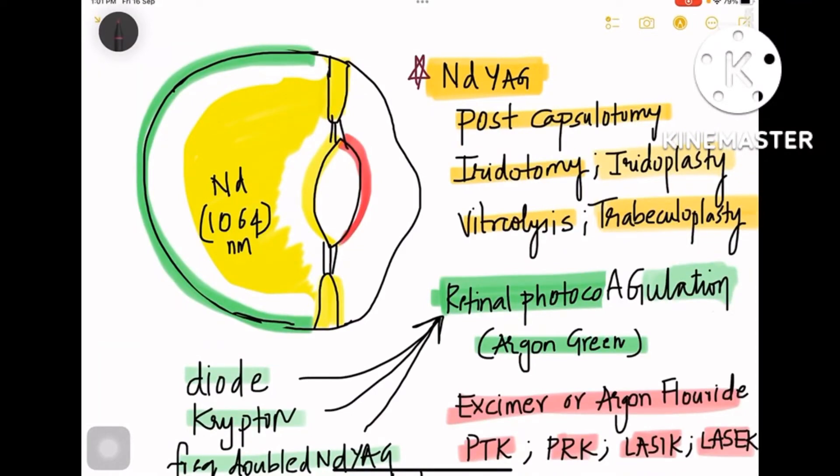Every name has Y in it: posterior capsulotomy for lens in the posterior capsule of the lens, and iridotomy, iridoplasty, which are shaded in yellow. So I have shaded vitreous, iris, and posterior capsule of the lens in yellow. So all the yellow surgeries are for Nd:YAG, and vitreolysis also has Y.